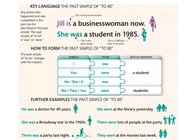The past simple of 'to be' — نبدأ بالفعل to be. هو was أو were حسب السبجكت متاعك. كما شفنا في the verb to be in the present عندنا am, is, are — ولكن هنا we have was or were. Jill is a businesswoman now — هذه is في الpresent.